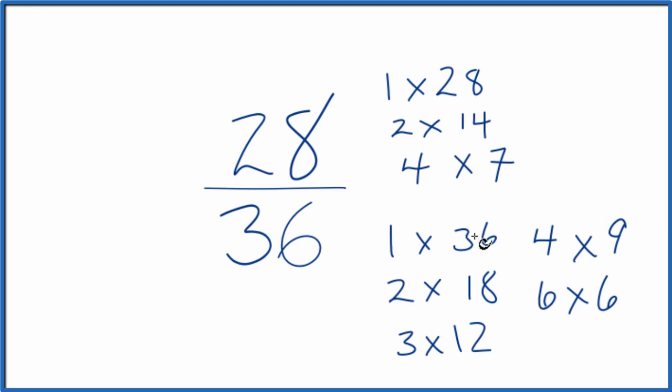We're looking for the greatest common factor. It looks like the greatest common factor is 4. So we'll divide 28 by 4 and then 36 by 4.